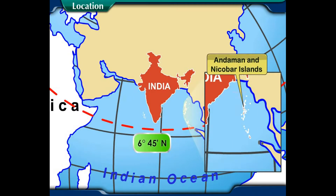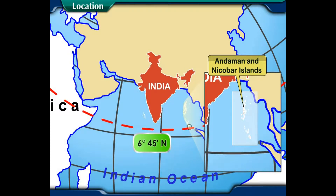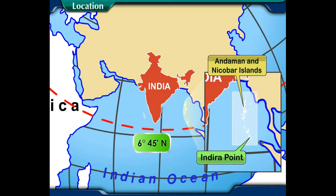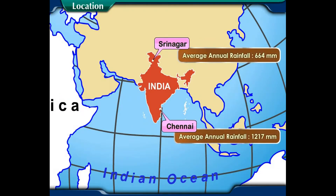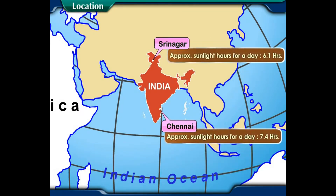This point is in Andaman and Nicobar Islands and is known as Indira Point. The latitudinal extent has an impact on the rainfall, temperature, and duration of days and nights of a place.